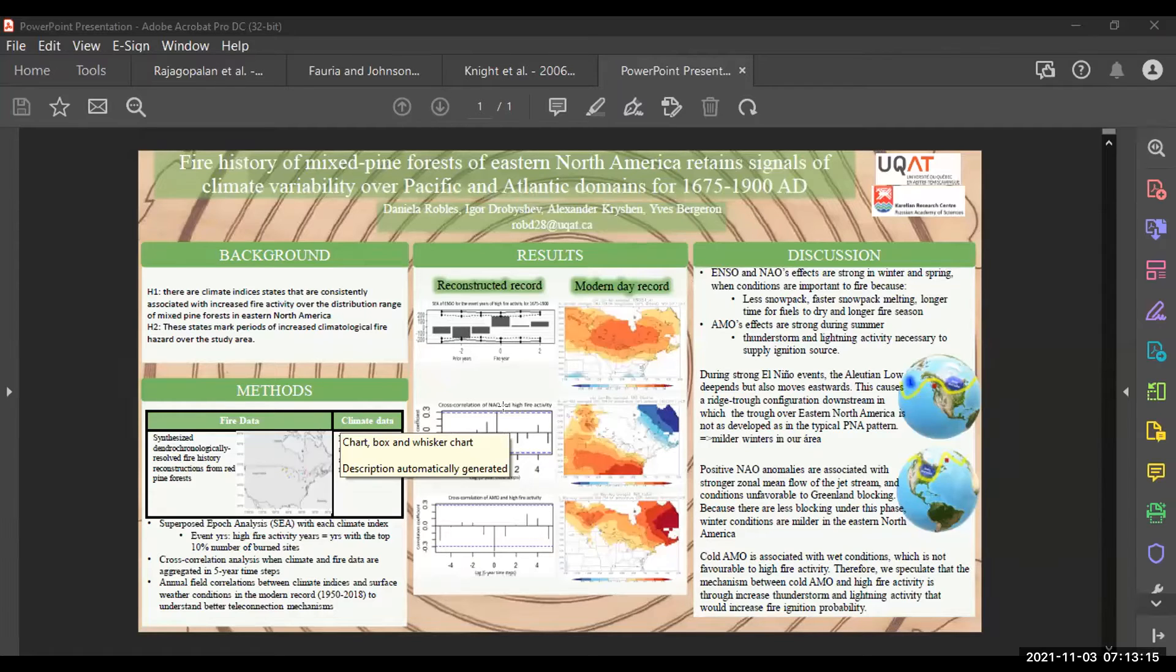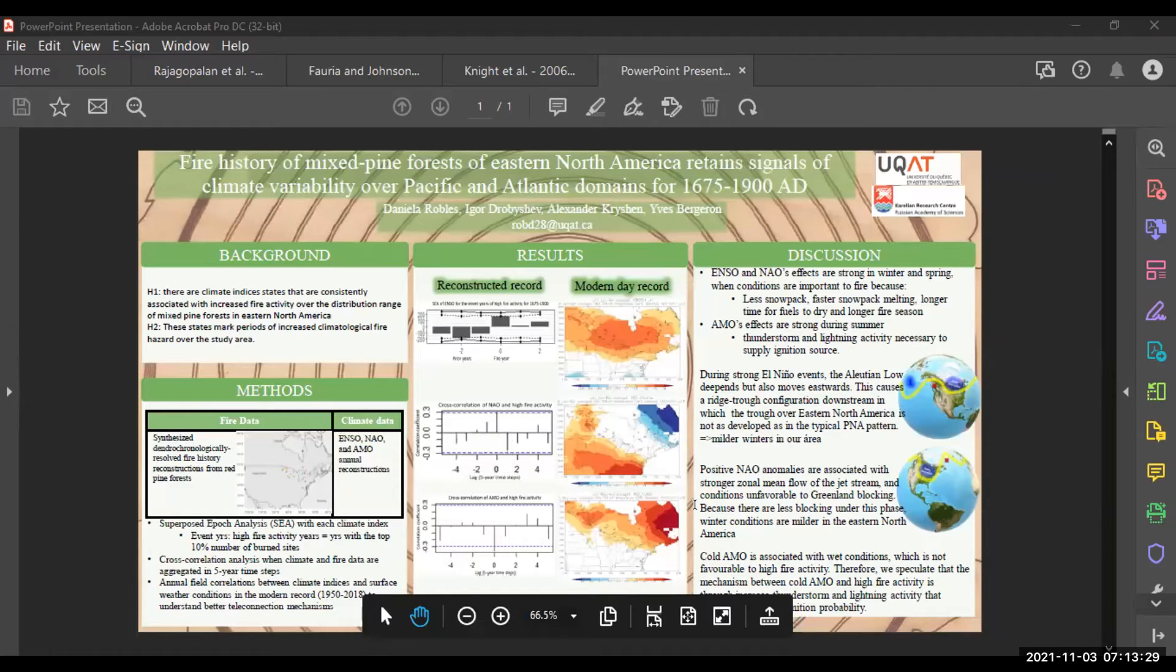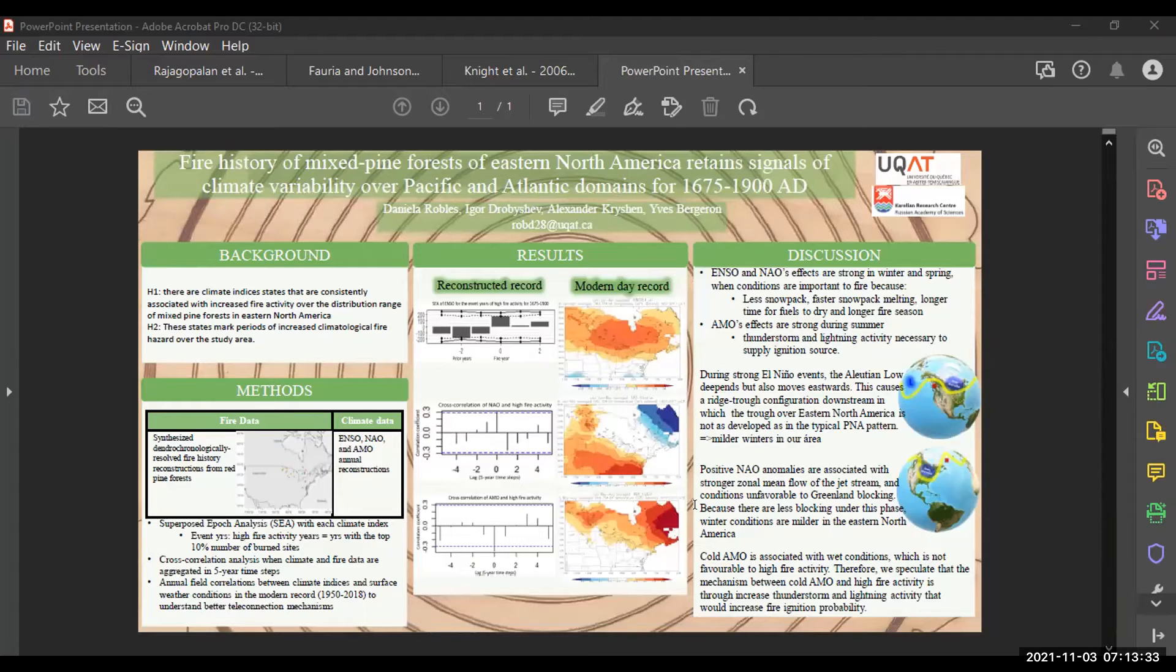And I might have to skip AMO because of the time restrictions. But don't worry, because ENSO and NAO they have very interesting stories. So we saw that ENSO and NAO, their effect is the most prominent in the winter and the spring. And processes that occur in the winter and the spring that are important to the fire season is the formation of snowpack and the melting of snowpack. We saw that ENSO and NAO they both create mild winters and warm springs. And under these conditions, there would be less snowpack and also faster melting of the snowpack. And this could increase fire activity because it increases the time for fuels to dry and also the fire season.